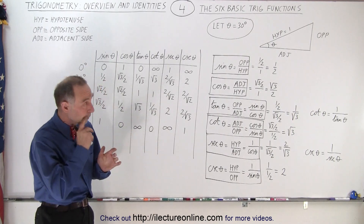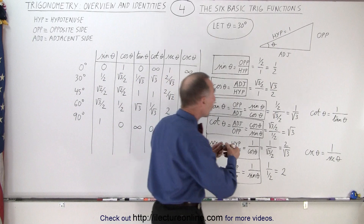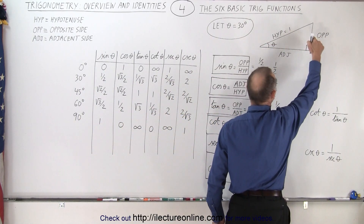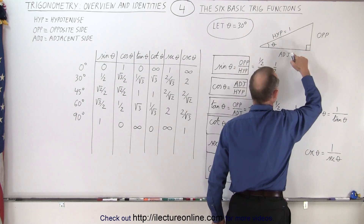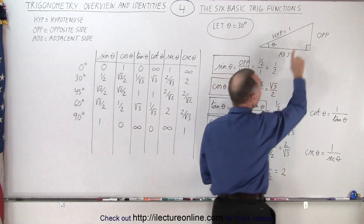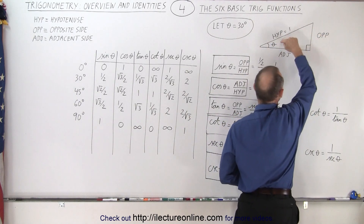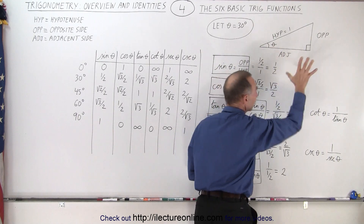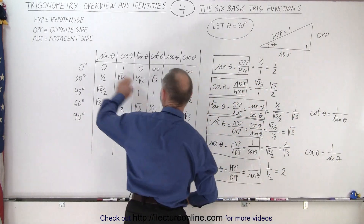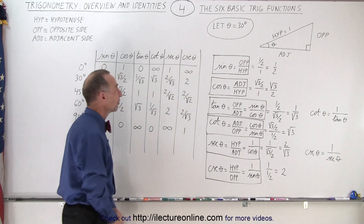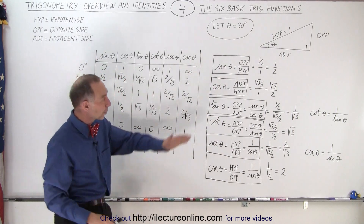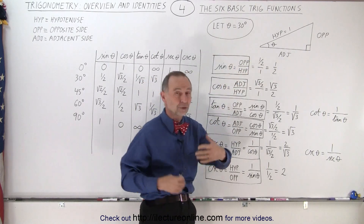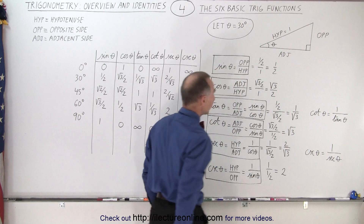The basic definition for a typical right triangle is that we have a hypotenuse along the side, then we have the opposite side and the adjacent side to the angle. We call it the opposite side because it's opposite the angle — it doesn't touch the angle. We call this the adjacent side because it touches the angle. The numbers we're going to use as examples are based on the angle being 30 degrees in this particular triangle.